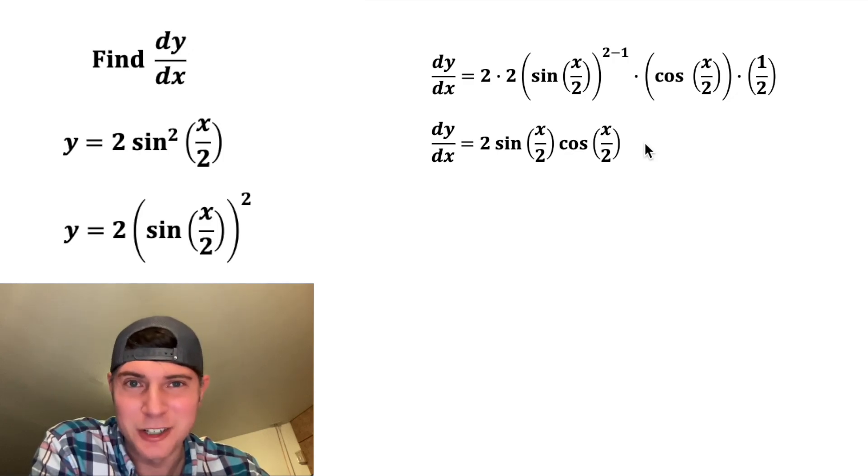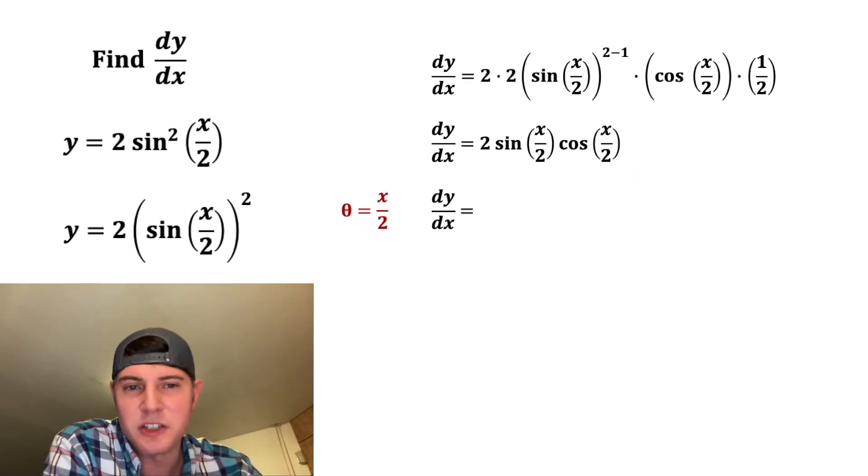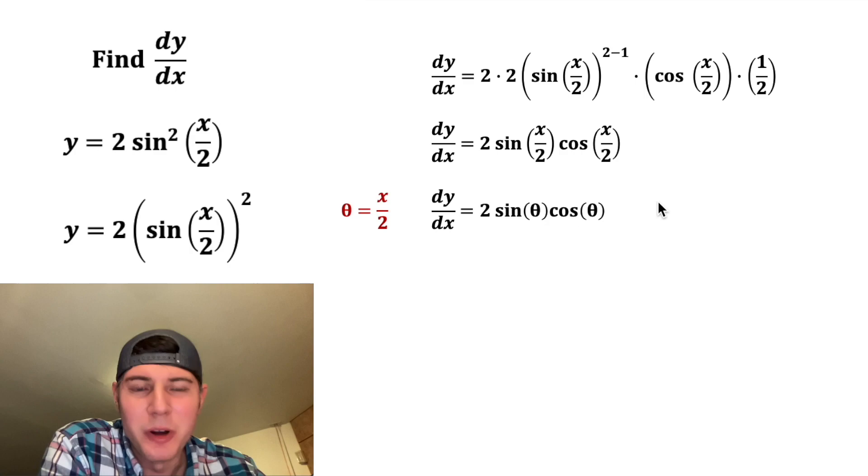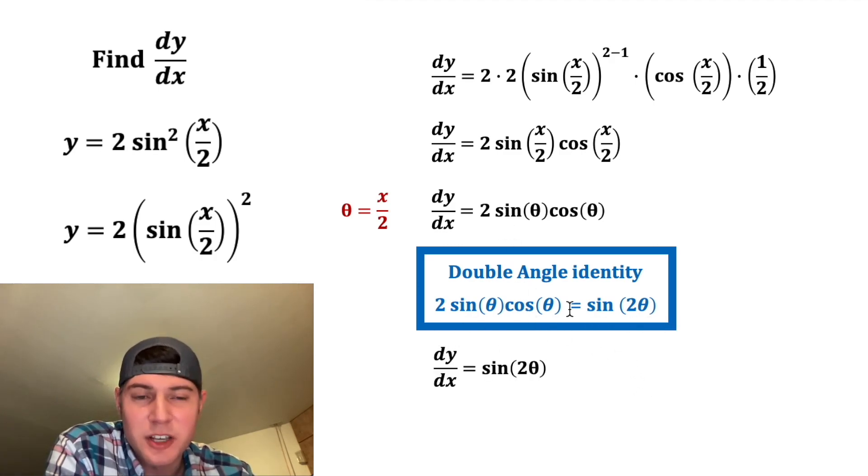This simplifies to an unexpected conclusion. If we do some theta substitution, set theta equal to this x over 2, we can rewrite the derivative as 2 sine theta cosine theta. What's cool about that, this is the exact expression in the double angle identity, where 2 sine theta cosine theta is equal to sine of 2 theta. So that means instead of 2 sine theta cosine theta, we can write this as sine of 2 theta.